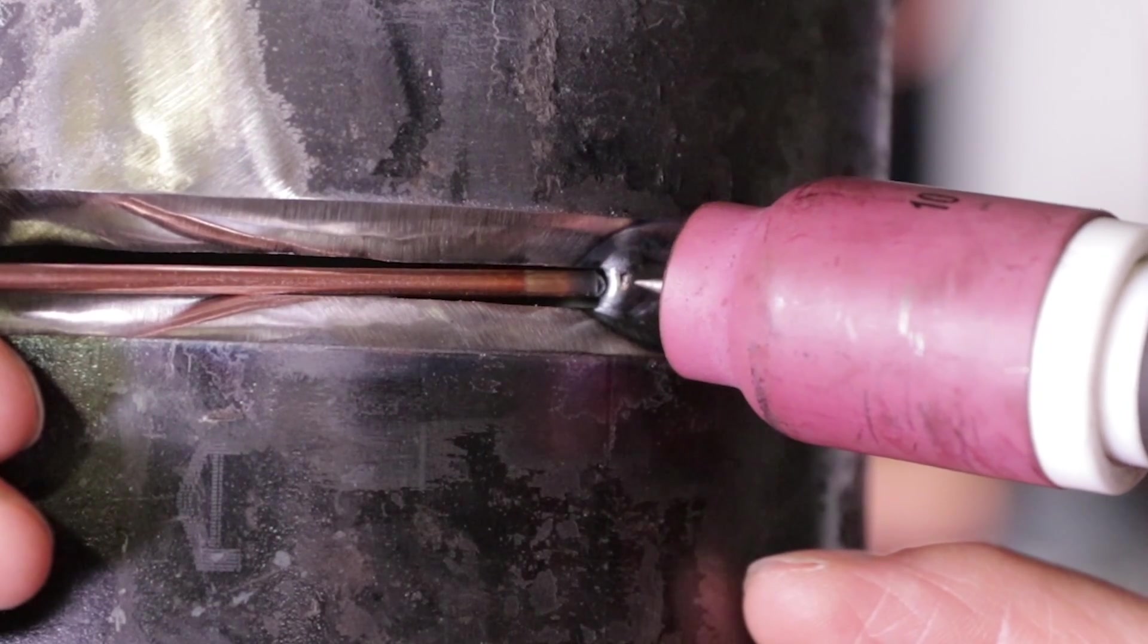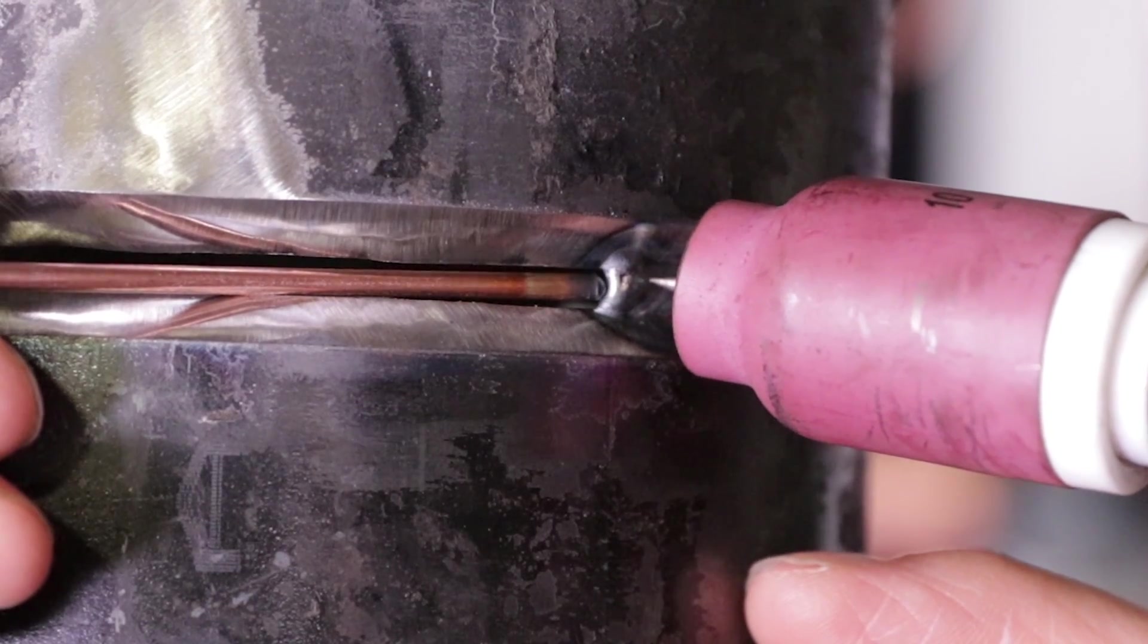Another thing that you want to pay attention to is you want to keep your tungsten behind the tip of the rod, right on the puddle.